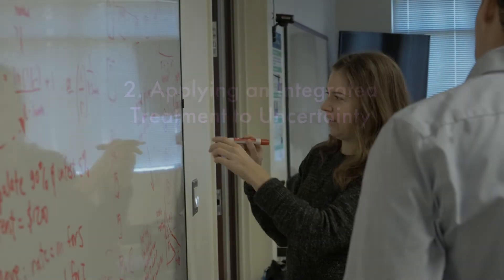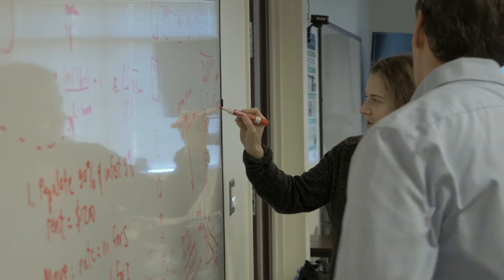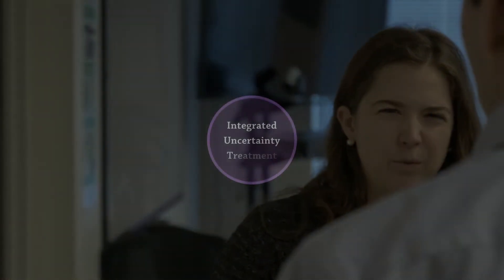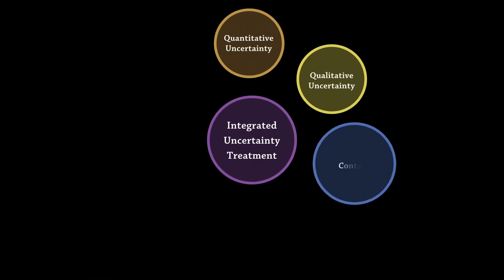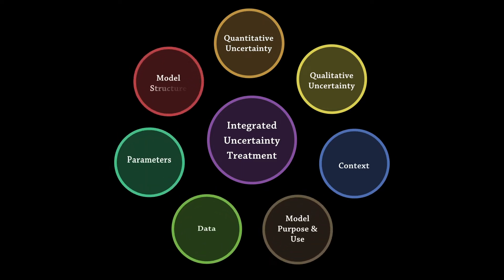While uncertainty cannot be avoided, it needs to be recognized, understood, and treated accordingly. Decisions made during the modeling process are not independent and cannot be simply treated in isolation. This requires integrated treatment of uncertainty — looking at both qualitative and quantitative sources of uncertainty in a holistic way, including uncertainty associated with data, parameters, model structures, and all other choices.